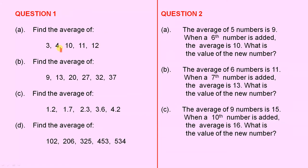Part A: Find the average of those 5 numbers. Part B: Find the average of the 6 numbers there. Part C: Find the average of those numbers, there are 5 of them. And Part D: Find the average of those 5 numbers there.